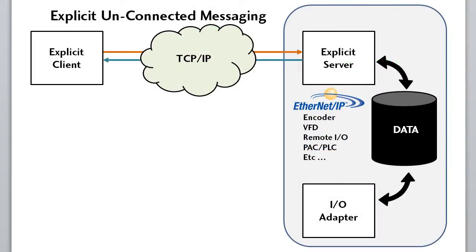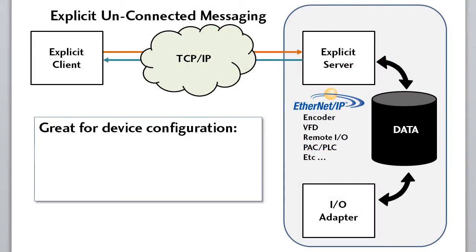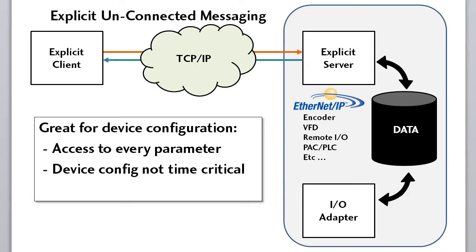Explicit unconnected messaging is typically used for setting up and configuring a device because it gives you access to every parameter in the device. Setting up the device is not time critical and you can be confident the parameter actually got to the device because it uses TCP/IP protocol which guarantees delivery of those parameters.